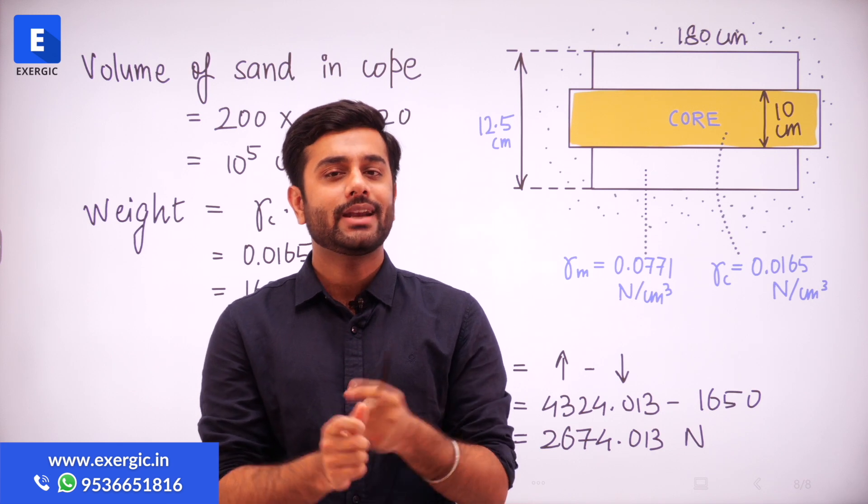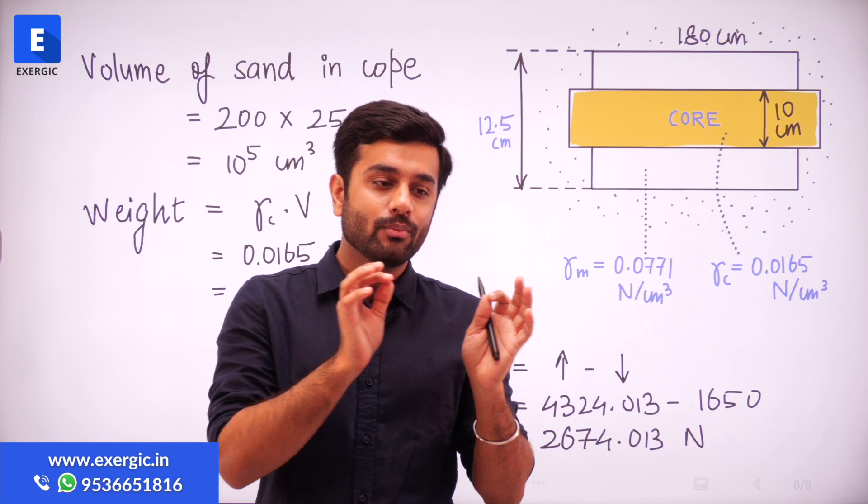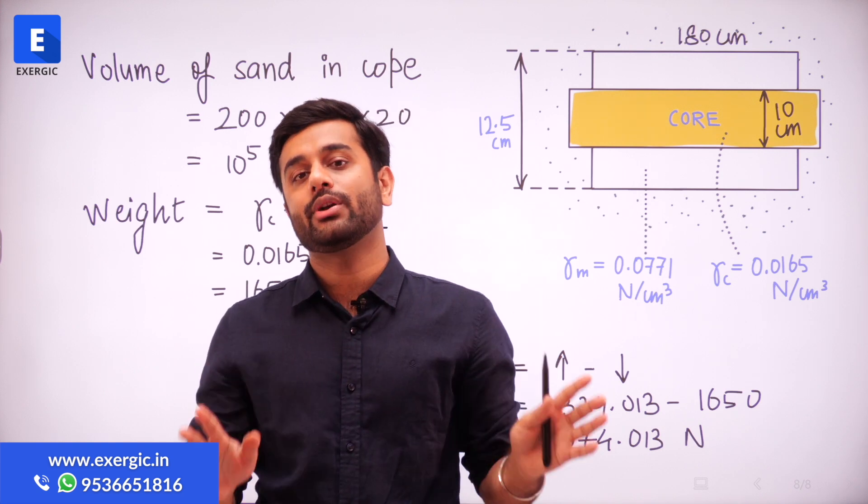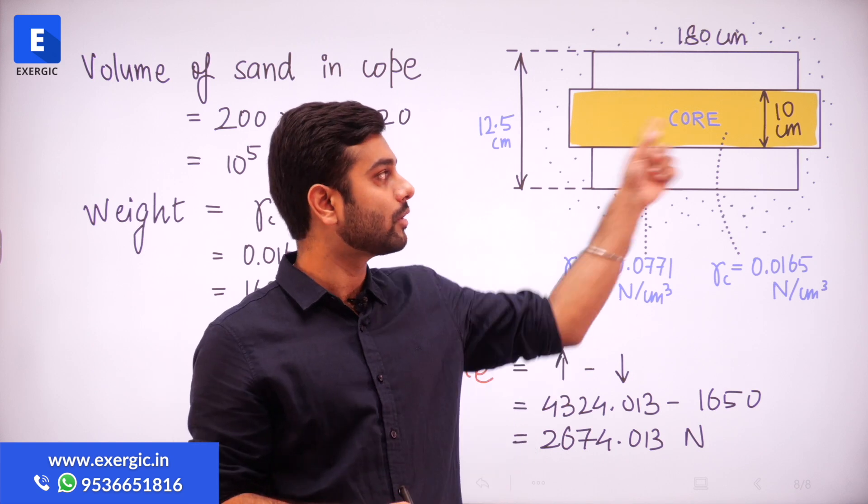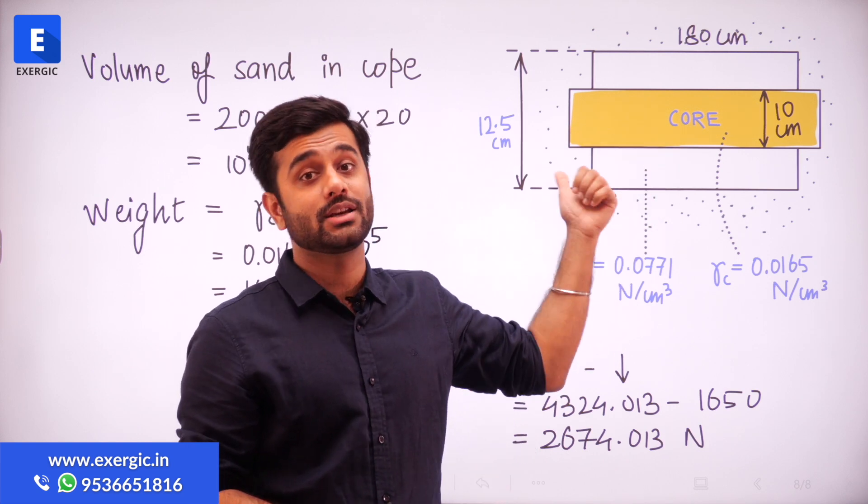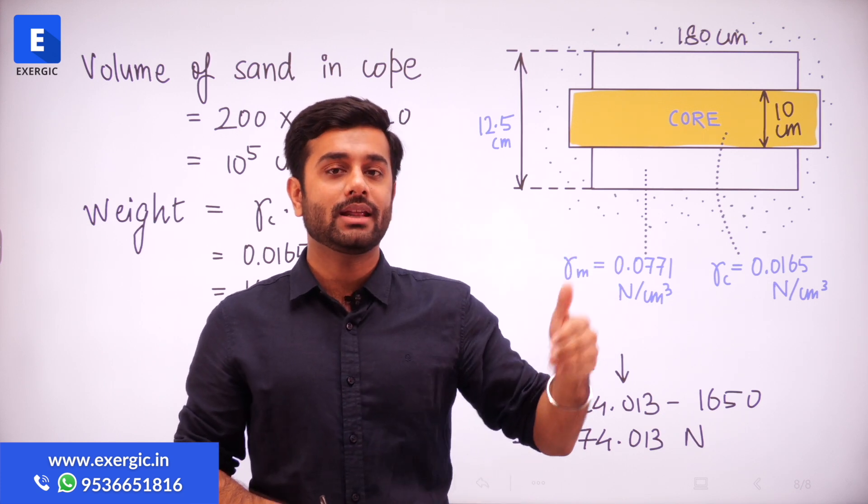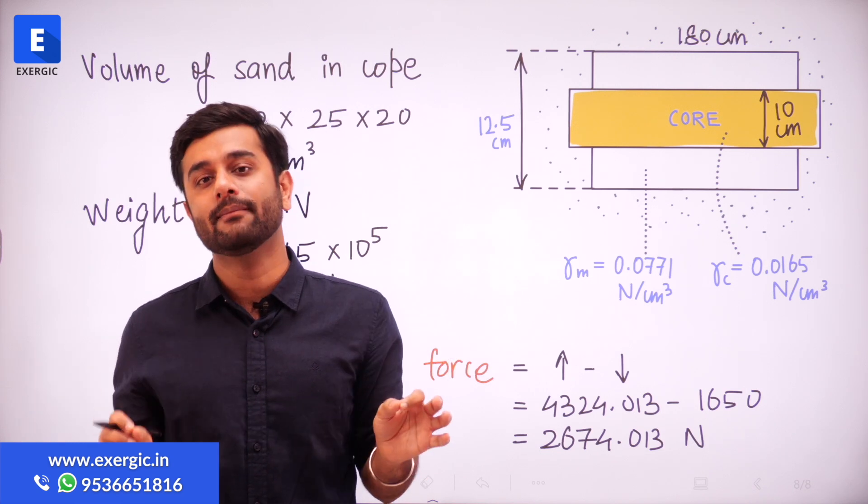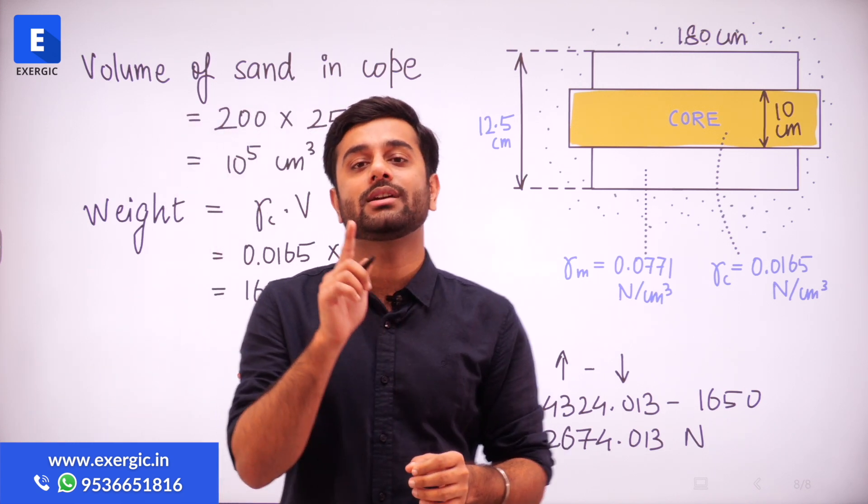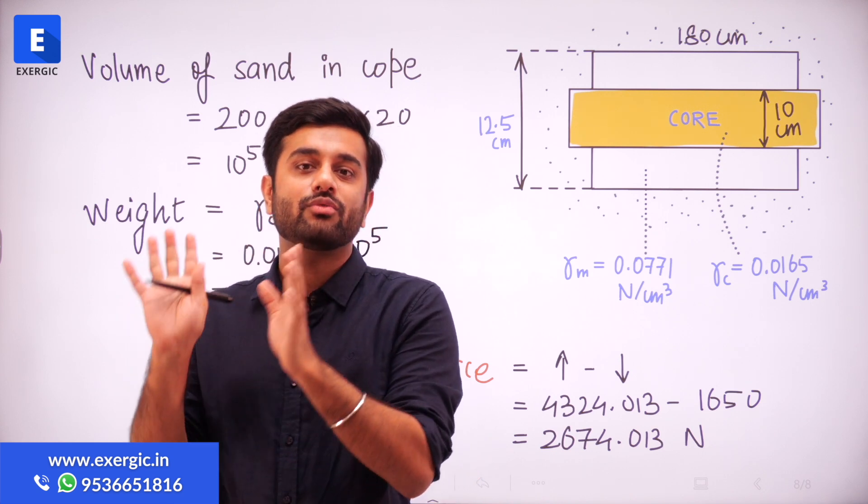Point number one is that if you get a question where the density of molding sand is not given to you, but the density of core material is given. The material of the core is given to you, but the density of molding sand is not given. And in the calculation of metallostatic force, you need the density of molding sand as well.